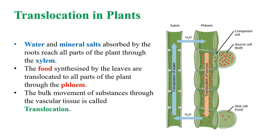In plants, water is absorbed by roots from the soil and food is synthesized by the leaves through photosynthesis. Water absorbed by the roots reaches other parts of the plant through the xylem, and the food synthesized by the leaves is transported to other plant parts by the phloem. The whole process is called translocation.